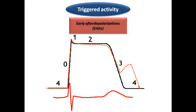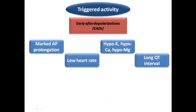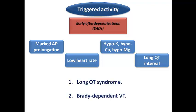Examples of early afterdepolarization include marked QT prolongation from antiarrhythmic medication, bradycardia, hypokalemia, hypocalcemia, and hypomagnesemia, which lead to a long QT interval. Long QT syndrome can be congenital or caused by medication. Famous examples of triggered activity caused by early afterdepolarization are long QT syndrome — congenital or acquired — and bradycardia-dependent VT.